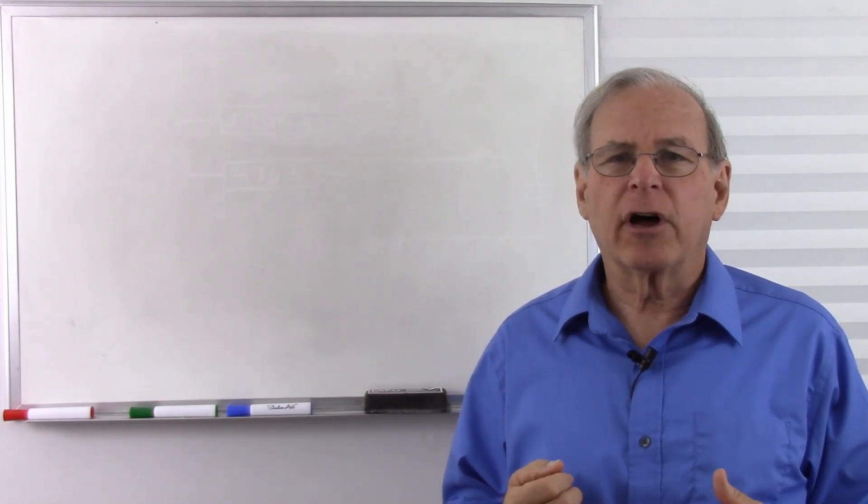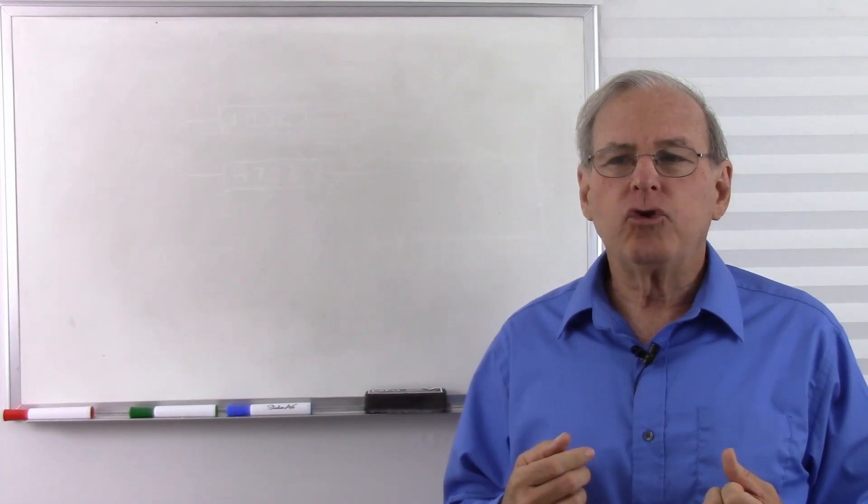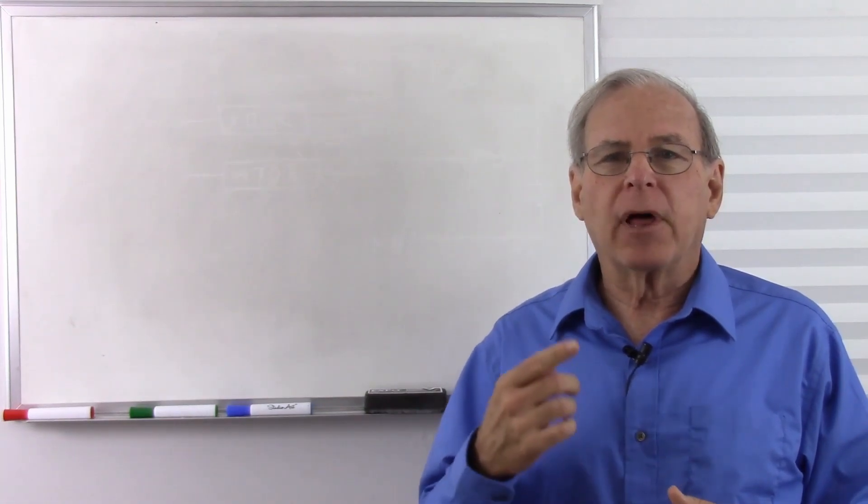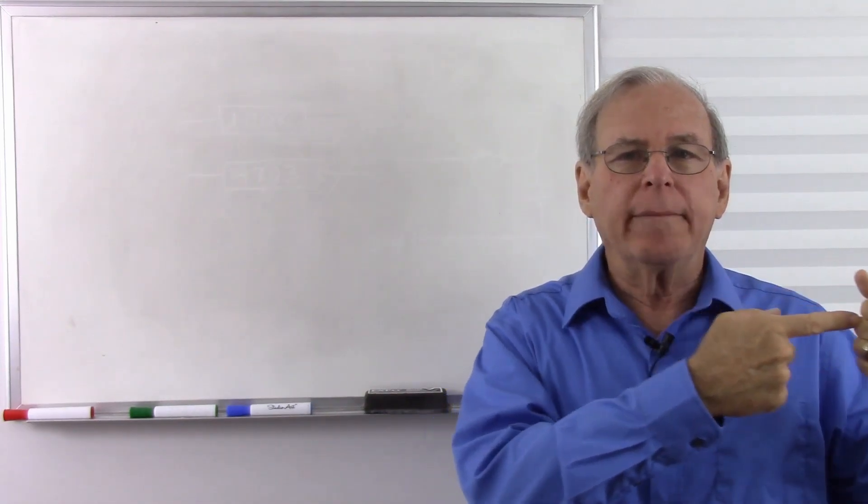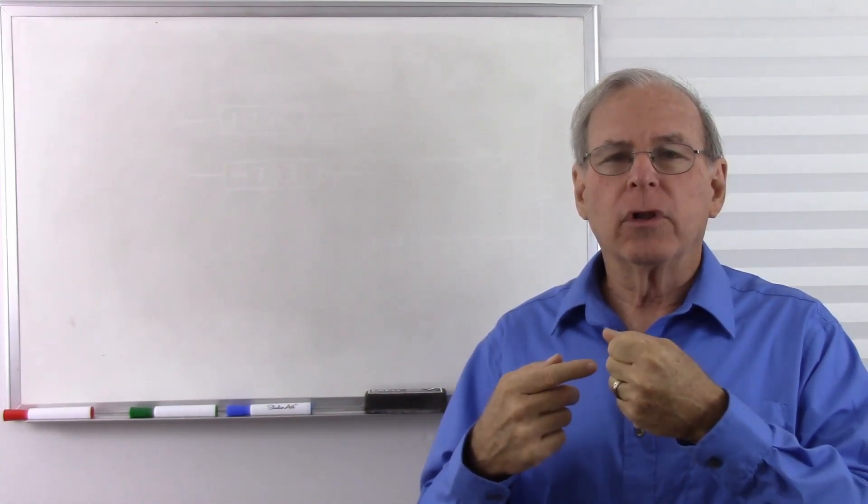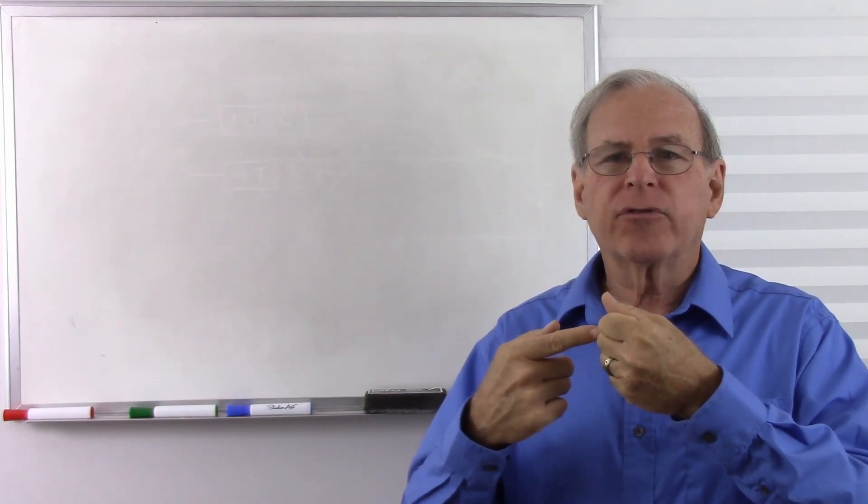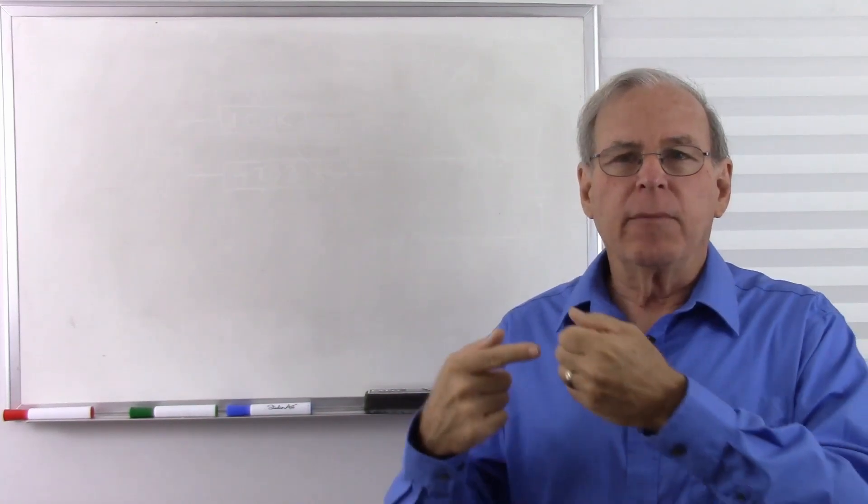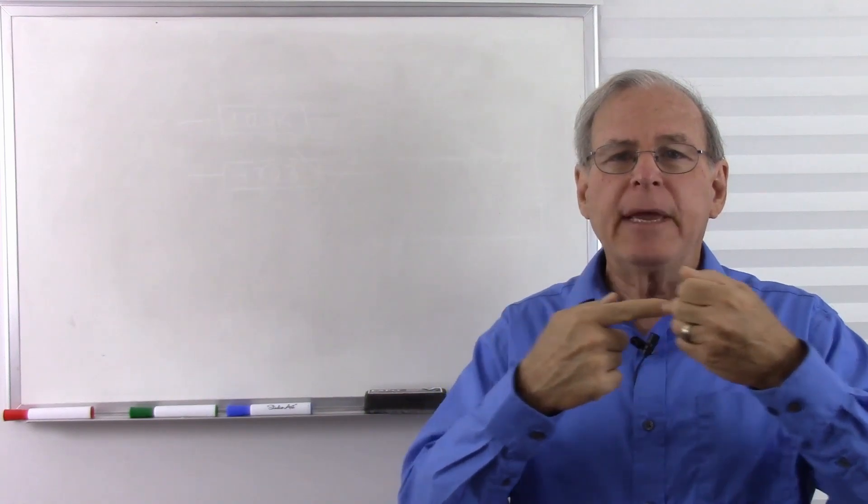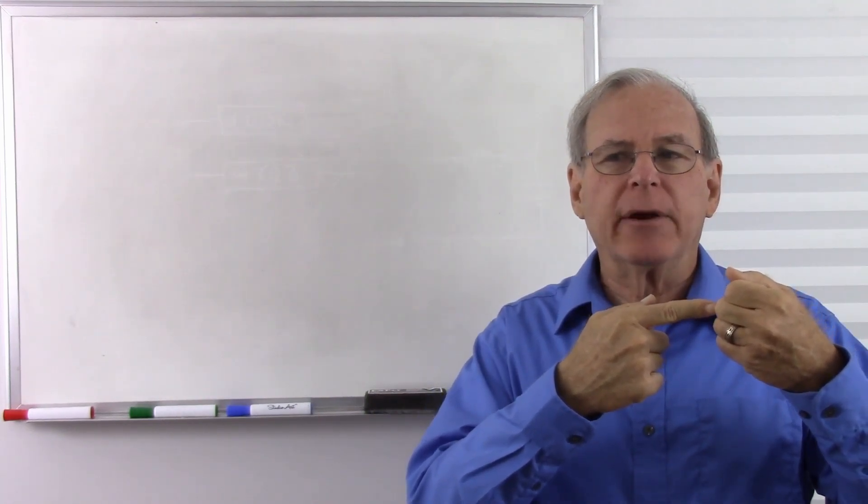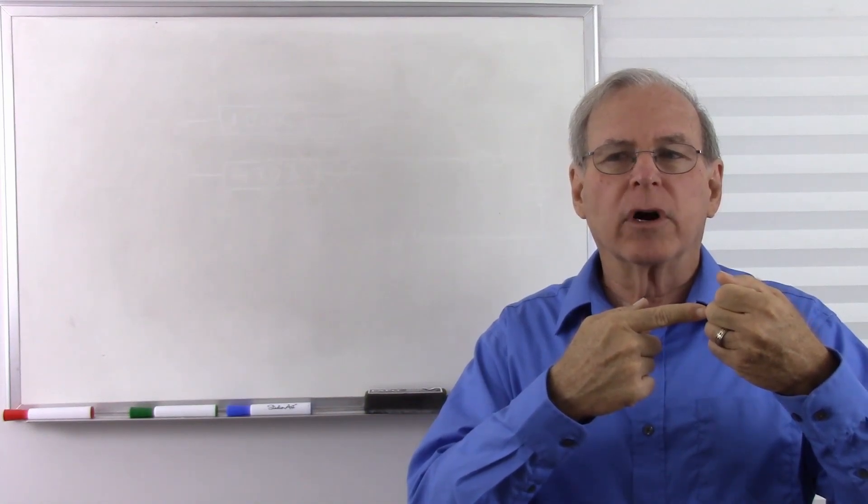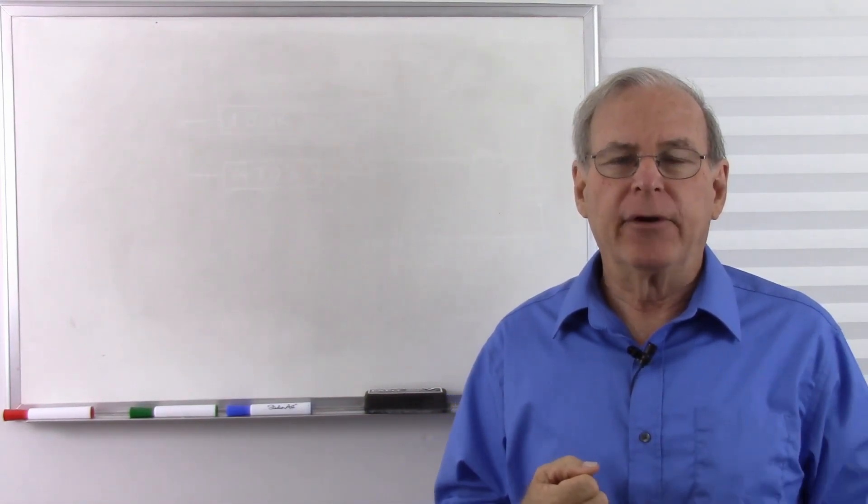The next unit to talk about is the joule. The joule is the amount of work done when you apply one Newton of force and move something one meter. So a joule is work, and work is force times distance. So if we move anything one meter, and we've applied one Newton of force to move it that one meter, we have done one joule of work. So a joule is one Newton per meter.